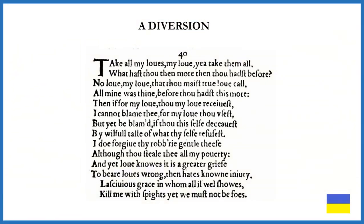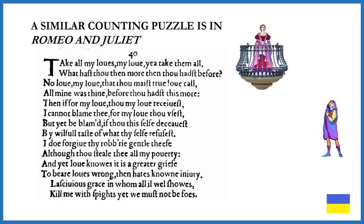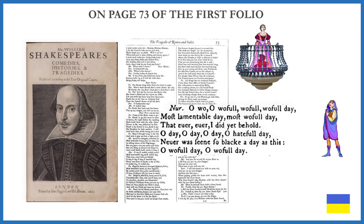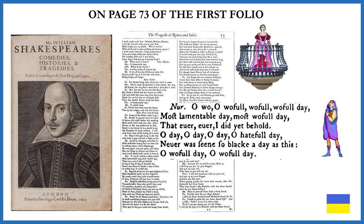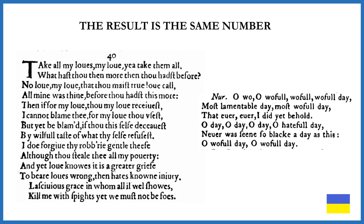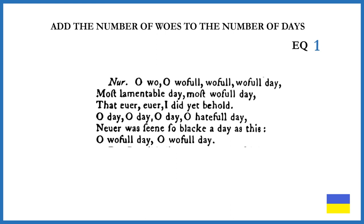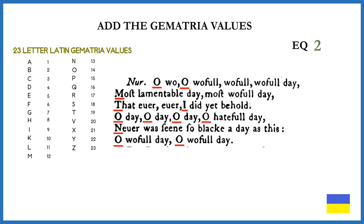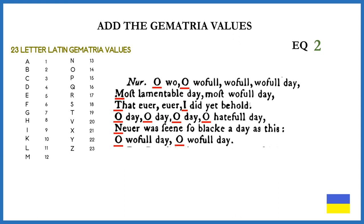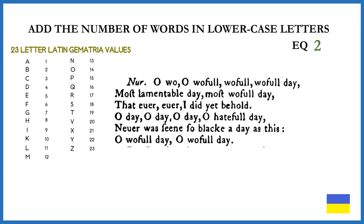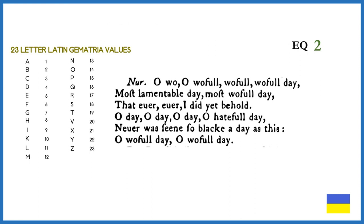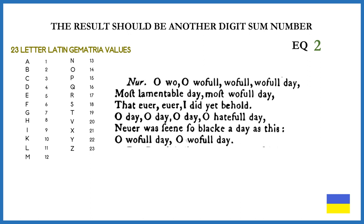A diversion for those who haven't seen 'days and woes': a similar accounting puzzle in Romeo and Juliet, on page 73 of the first folio. The result is the same number. Add the number of woes to the number of days — this is equation 1. Add the gematria values of the lowercase letters for equation 2. The results of equation 2 should be another digit sum number.